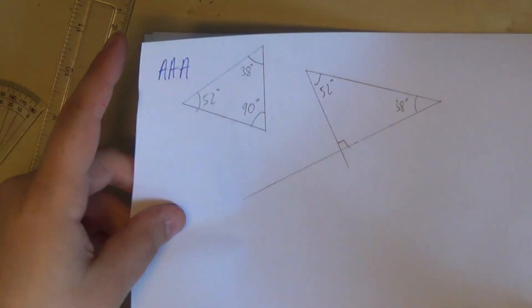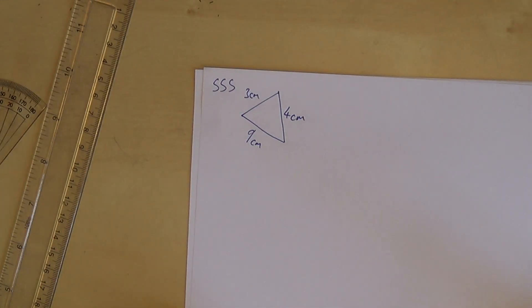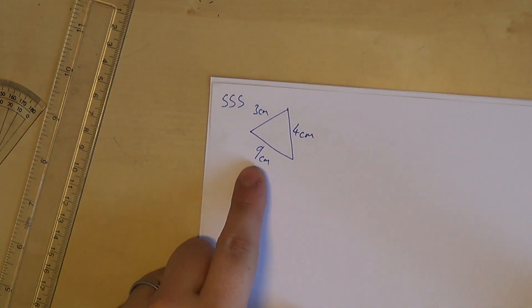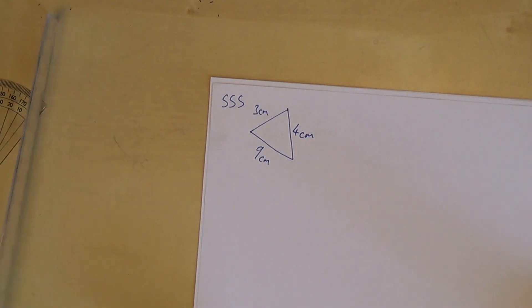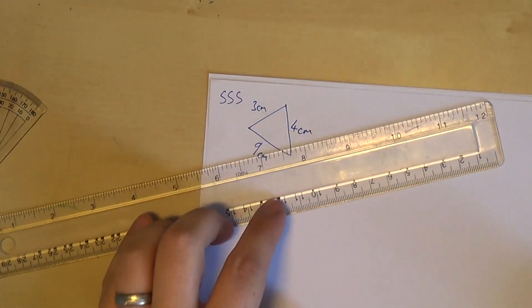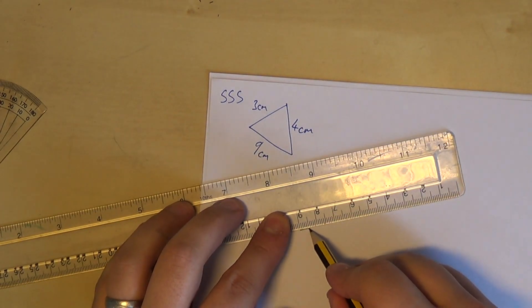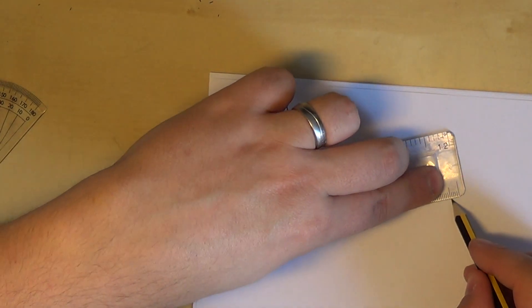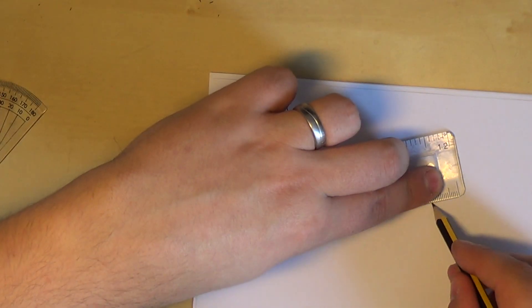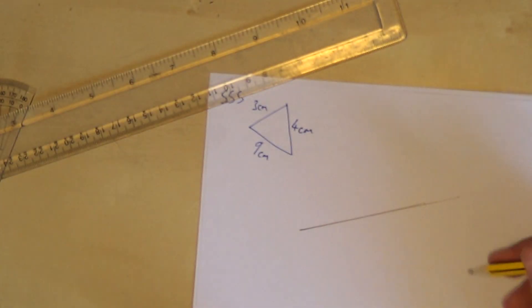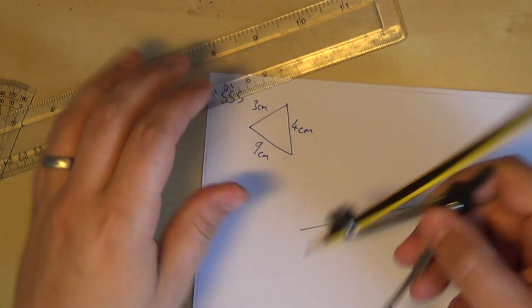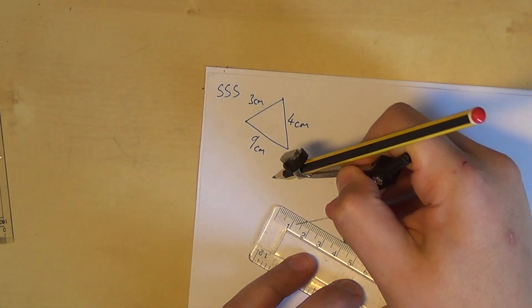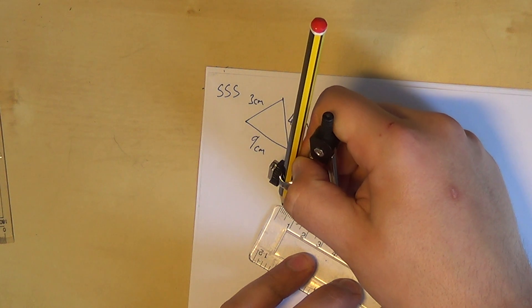For the really tricky ones — three sides: nine, three, and four centimetres. My usual rule of thumb is to start with the long one, although that doesn't actually matter; it's just about planning for the space you've got to work in. If you can fit the longest edge in, you can fit the rest in. So we have a length but not a direction, so we need to set this to a length but not a direction. We set that to four.